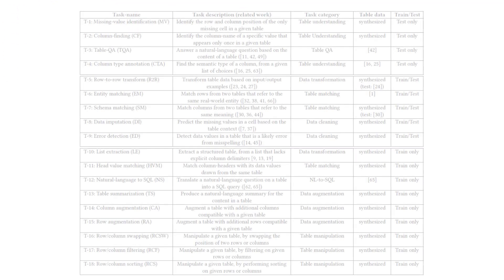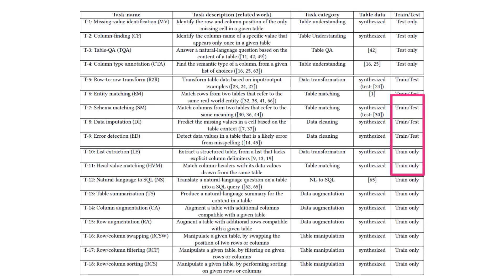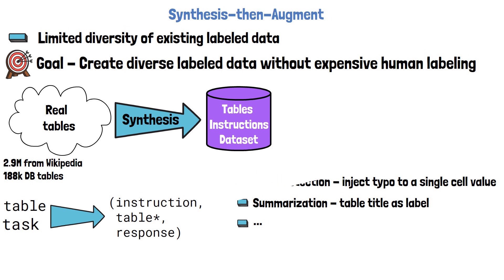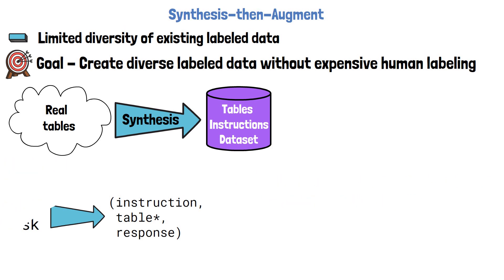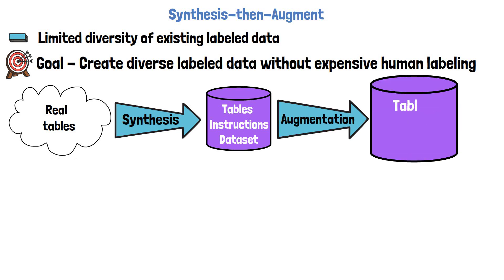Another task is table summarization, where a title from a Wikipedia table is used as the label, among various more tasks. A summary table from the paper shows the different tasks: some are used for training only, some for training and testing, and some only at test time. Data for most tasks is synthesized, while for a few more complex tasks they use previous research data.